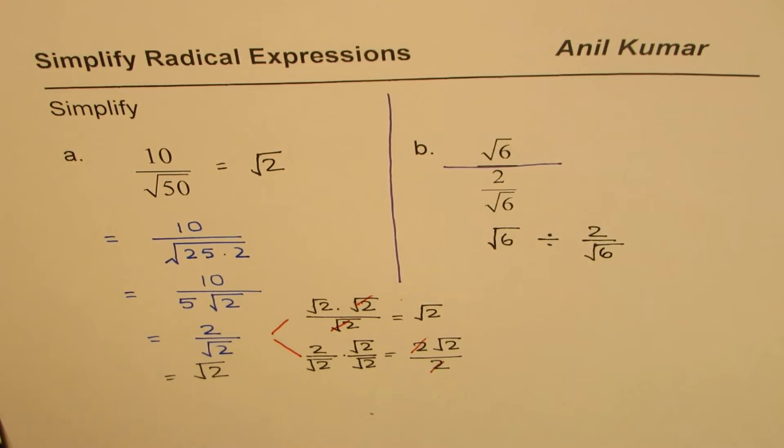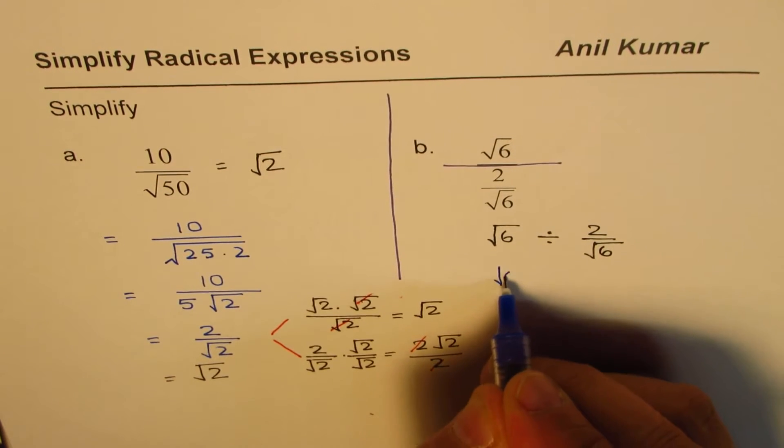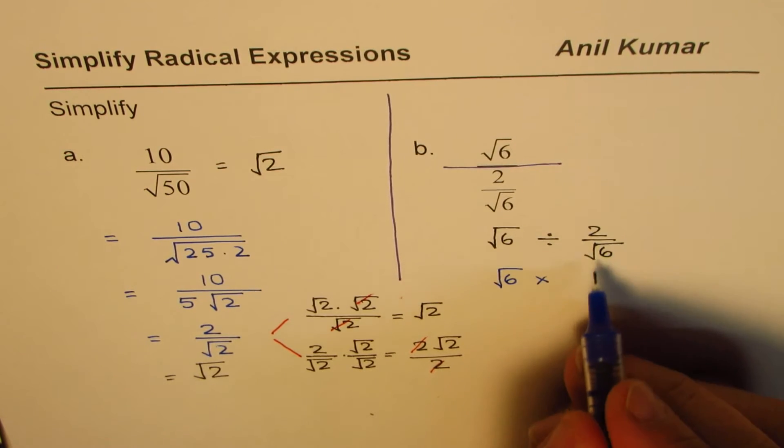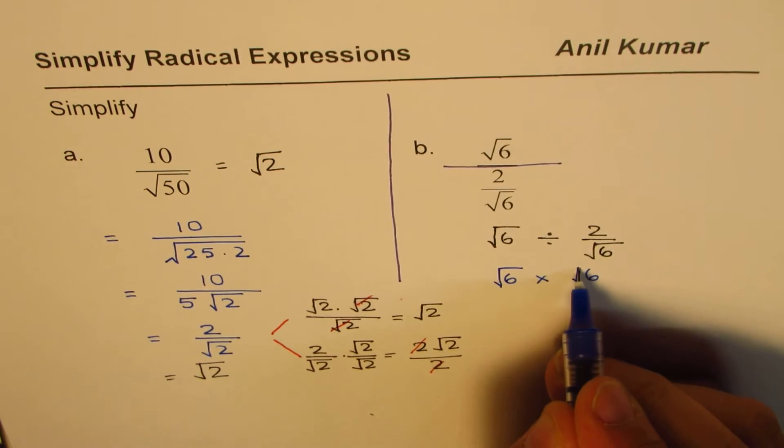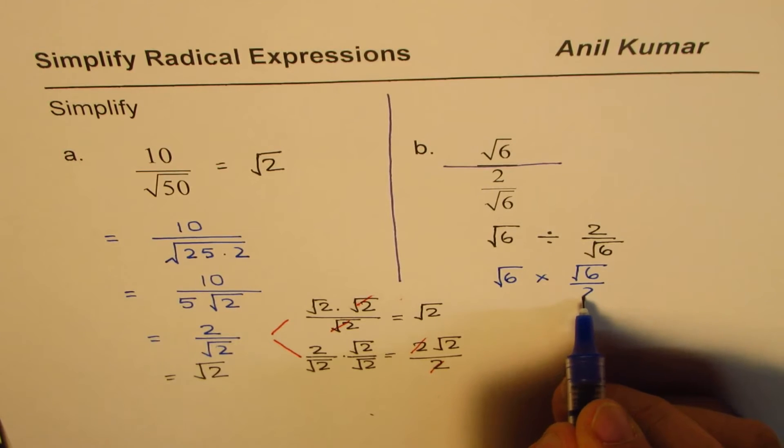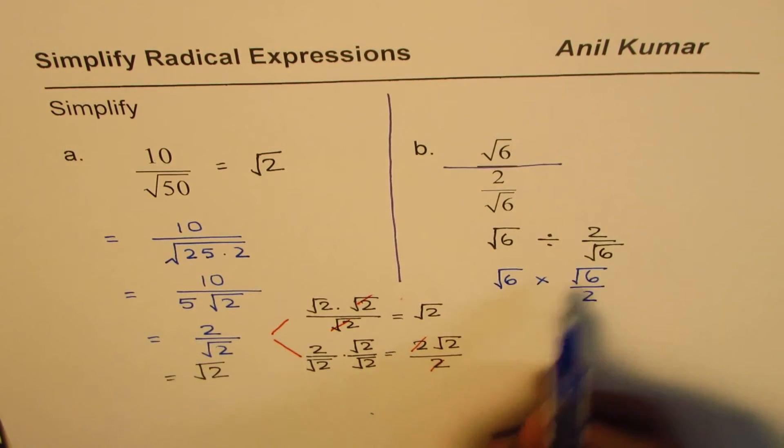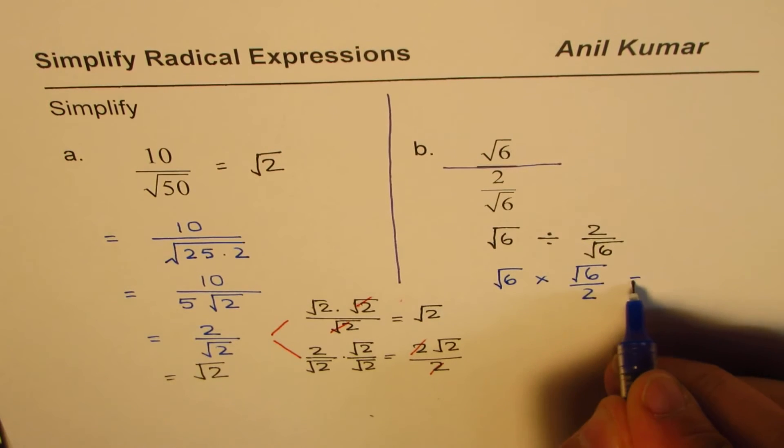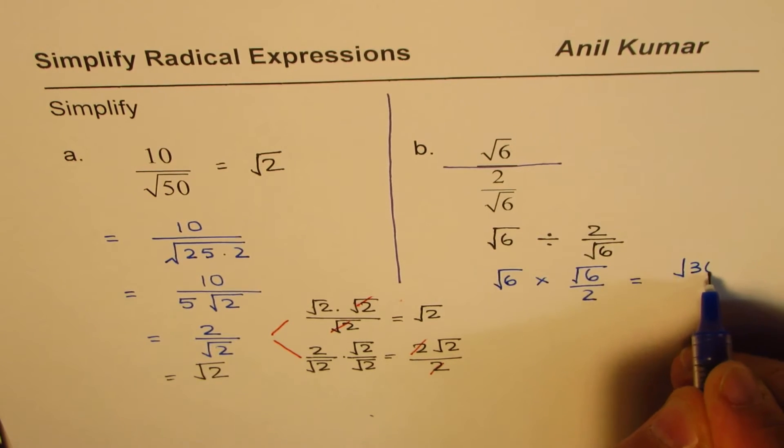Which you could write as—let me change the ink—square root of 6 times, when you do times, you can flip it. It becomes square root of 6 over 2, correct? Now square root of 6 times square root 6 is square root 36. You could write this as square root of 36 over 2, right?